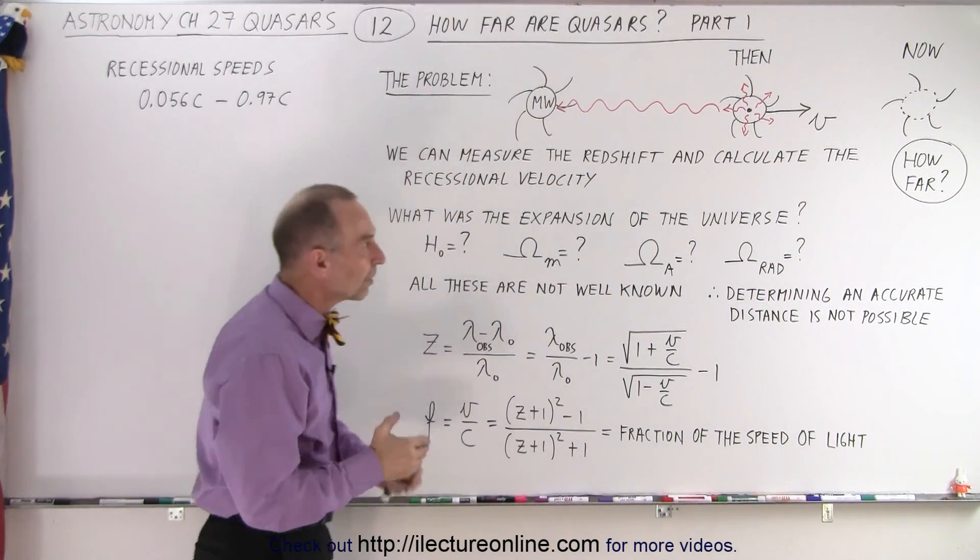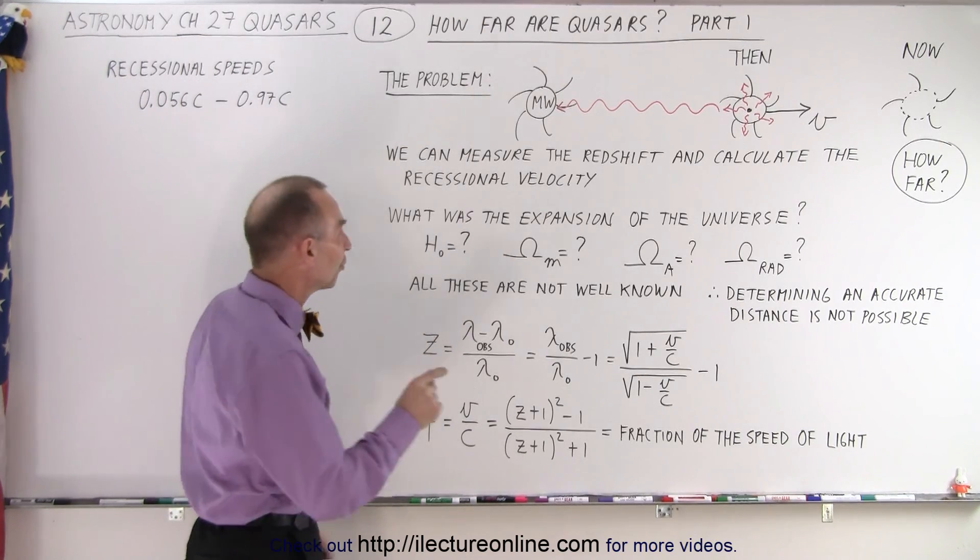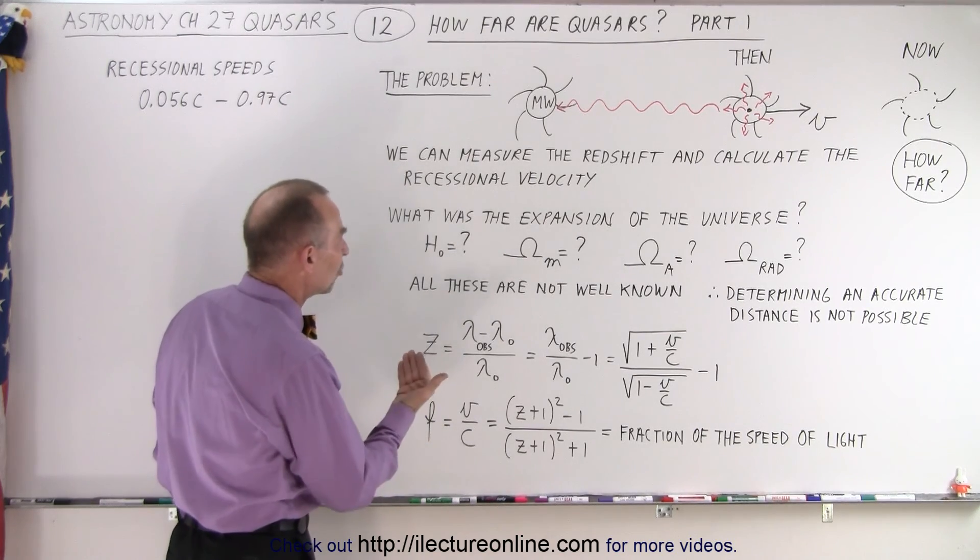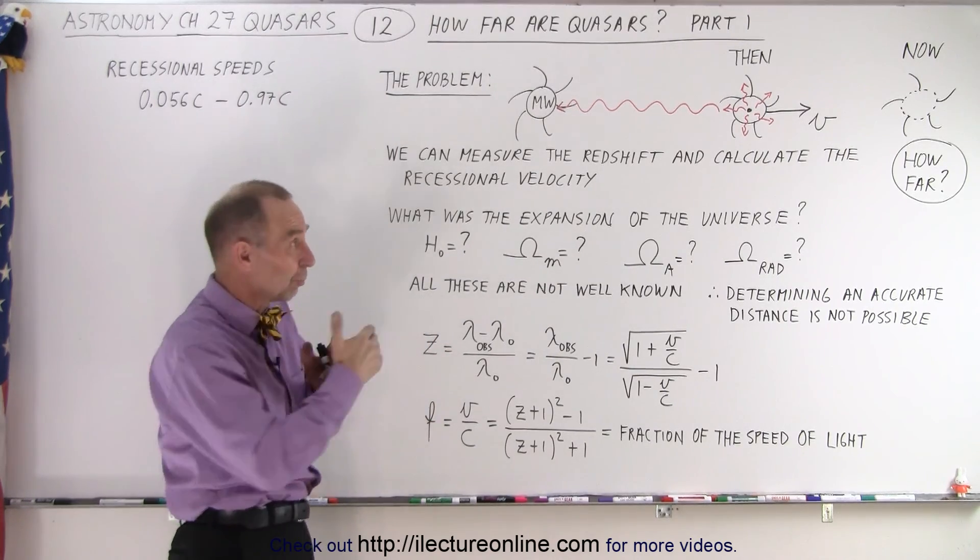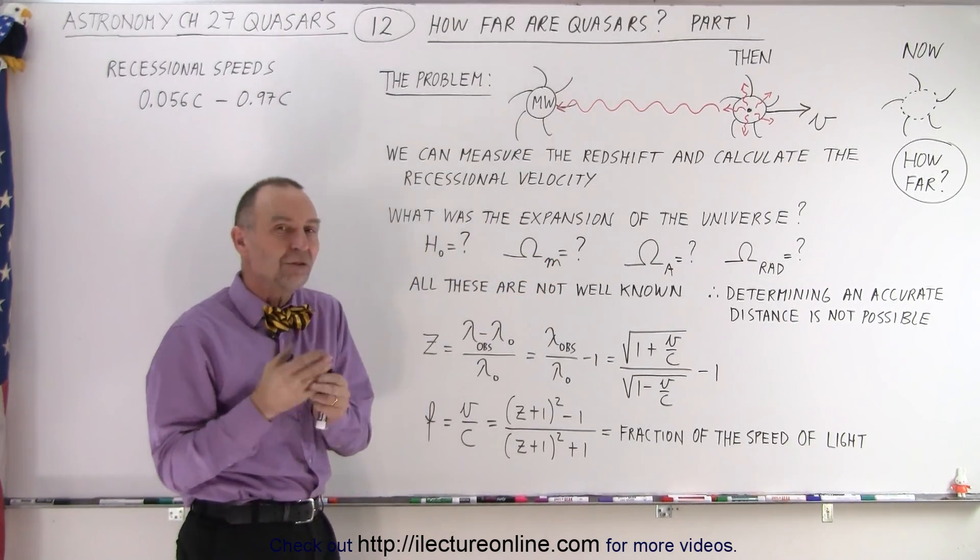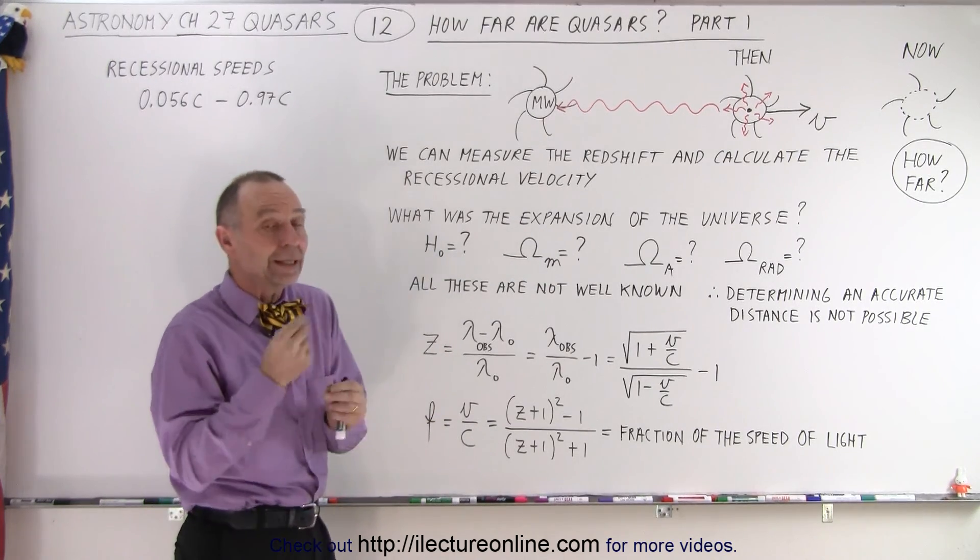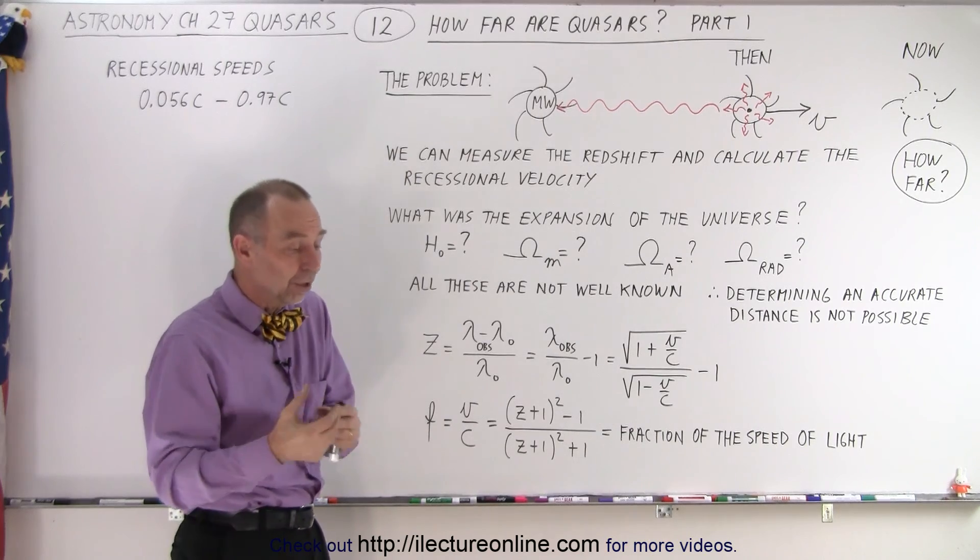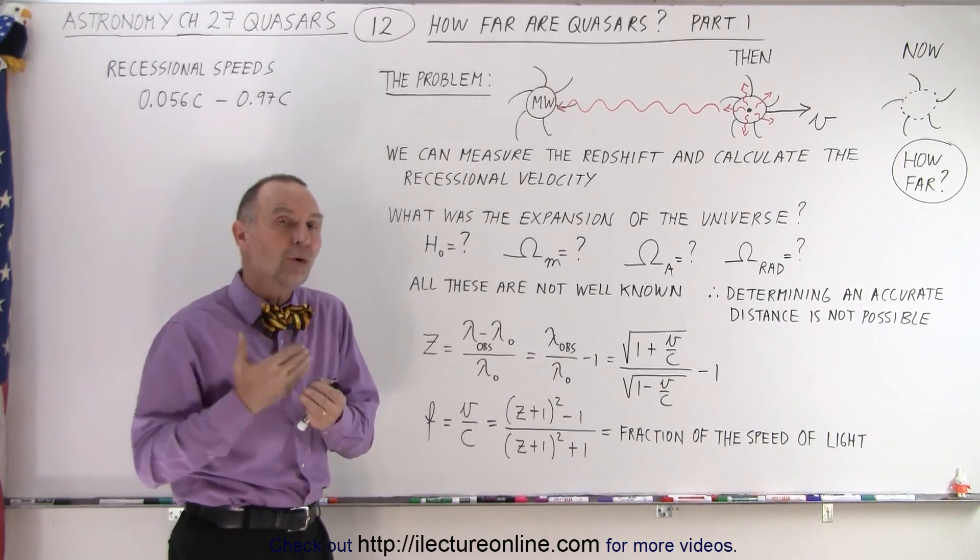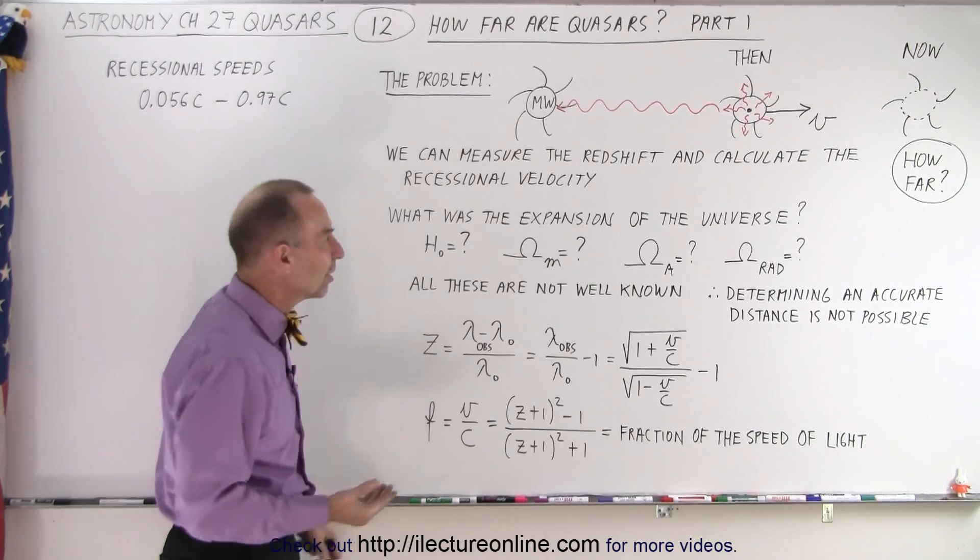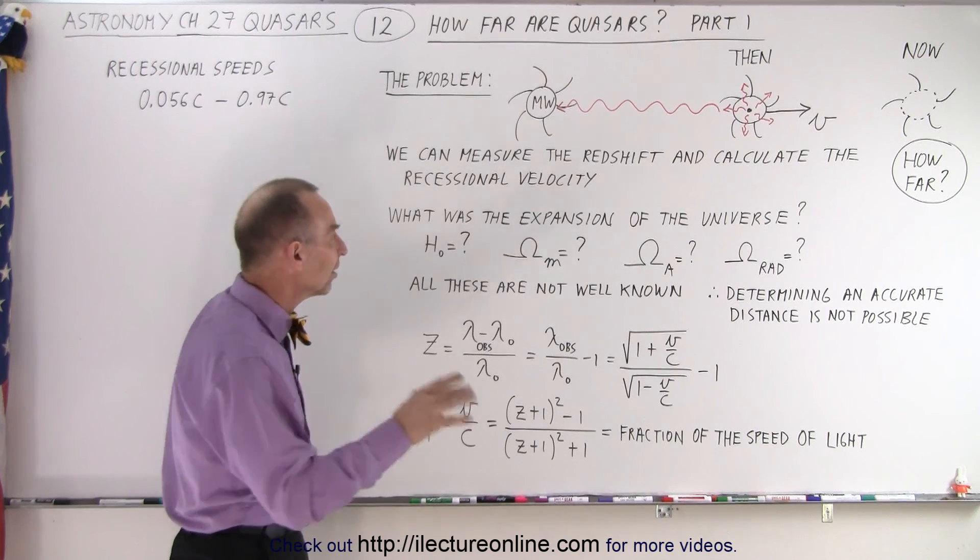So it's better to talk about the distance to faraway objects in terms of two things. First of all, the redshift. We can calculate the redshift, and since they're moving so fast, the redshift will have relativistic aspects to it, and we'll see that in just a moment. And we can calculate the recessional velocity. So we can talk about the distance in terms of the redshift or in terms of the recessional velocity. And this is the reason why we can't calculate the distance accurately.